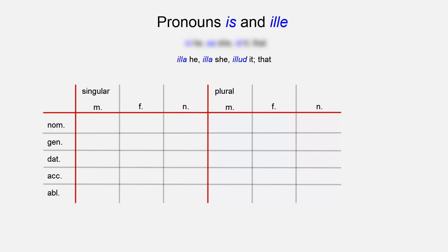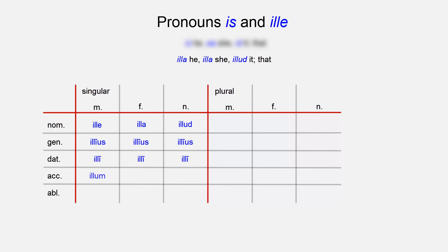For illa, illa, and illud, also meaning he, she, and it: the singular masculine nominative is illa, the feminine nominative illa, and the neuter nominative eilud. The genitive singular masculine eius is the same as the feminine and the neuter. The dative is the same for all three cases: ee, ee, ee. The accusative singular masculine is eilum, the feminine eilam, and the neuter eilud.